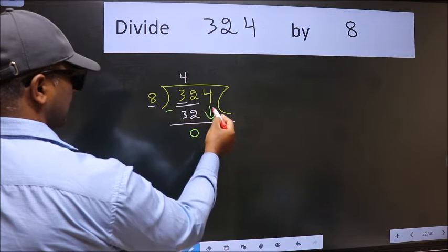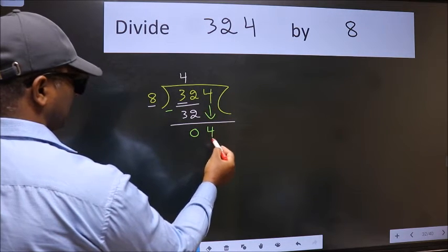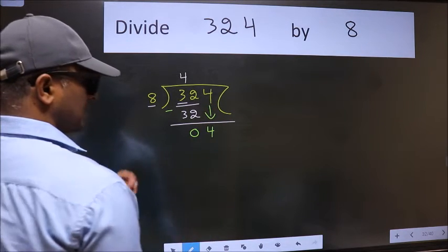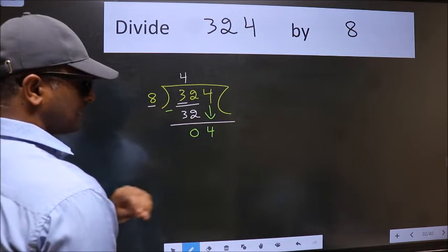After this, bring down the beside number. So 4 down. After this step, the mistake happens. And the mistake is this.